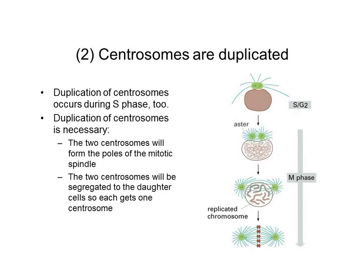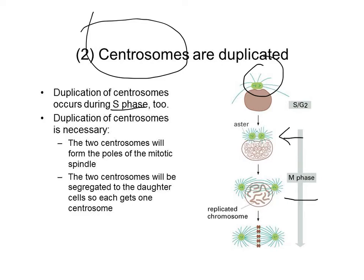In addition to thinking about duplication of chromosomes in S phase, we also need to duplicate centrosomes — also called microtubule organizing centers, or MTOCs. These get duplicated at the beginning of S phase, and they will duplicate but will not separate until the onset of M phase. So they'll remain together as kind of a single centrosome or microtubule organizing center. Ultimately, these two centrosomes will eventually migrate apart at the onset of M phase, or the beginning of mitosis, to form two separate poles of the mitotic spindle — and this is critical for proper alignment and separation of chromosomes.